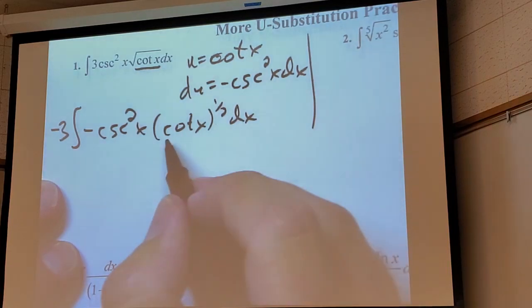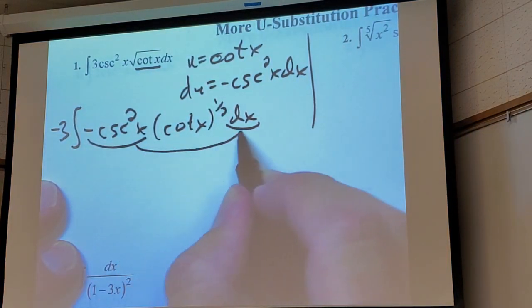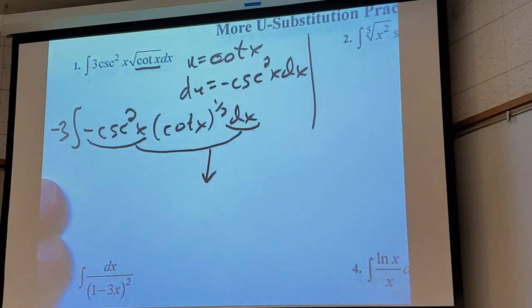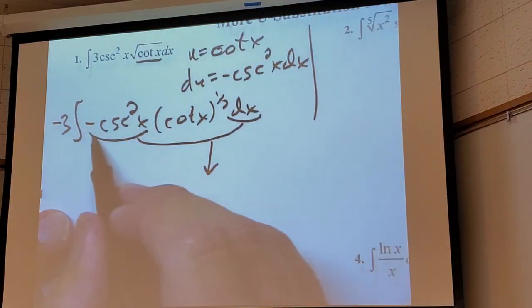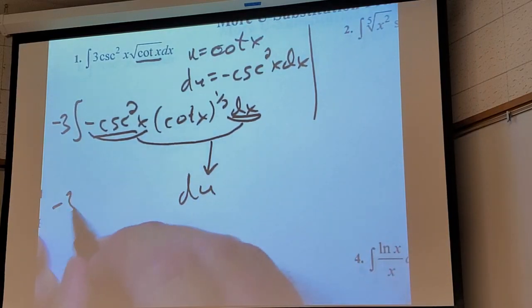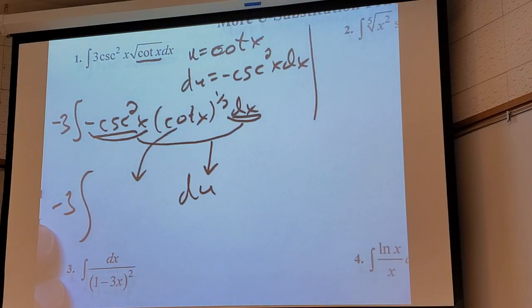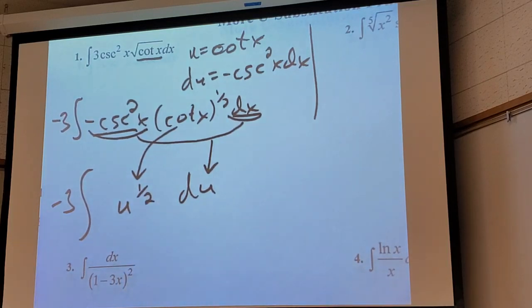So then this, what is this here? This and this. That's du. And then this can be written as u to the one half, right? And that's a nice negative problem.